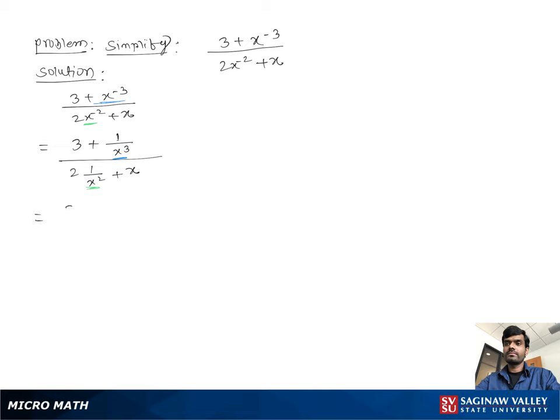Now our LCD is x cube so you can write 3x cube plus 1 over x cube. Over again, LCD is x square so you can add 2 plus x square times x over x square.